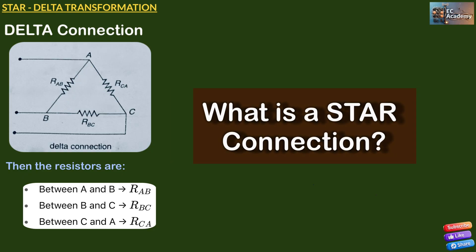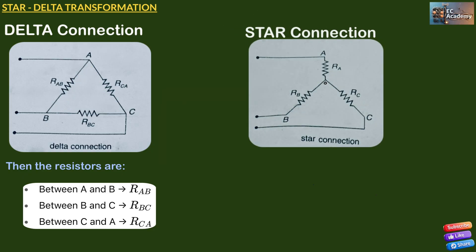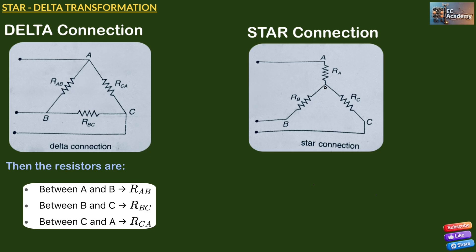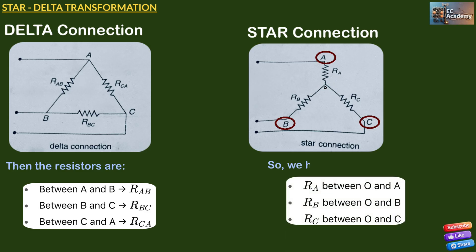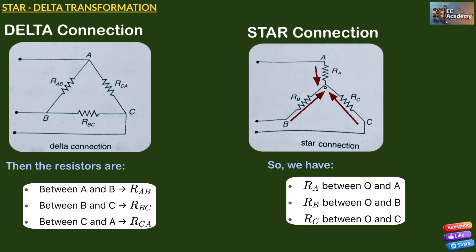What is a star connection? Imagine a star connection — here there is a central node, let us call it point 0. Each resistor connects from the central node to an outer point A, B, and C. So we have RA between 0 and A, RB between 0 and B, and RC between 0 and C. That is why it is called a star, where three branches meet at one center point.